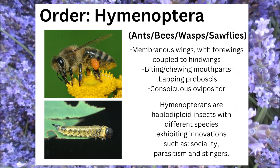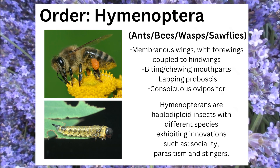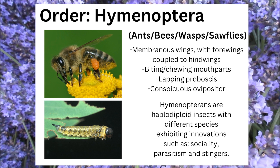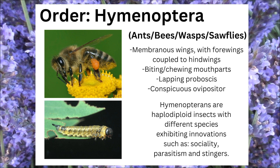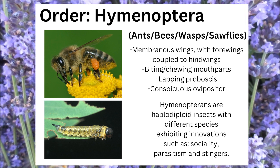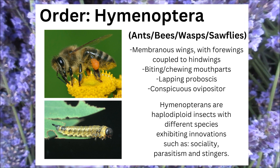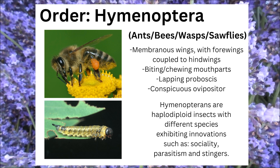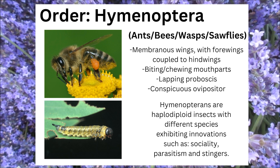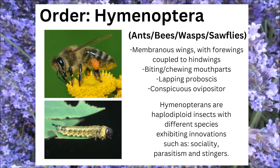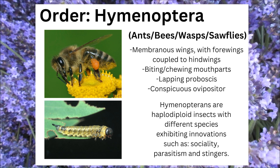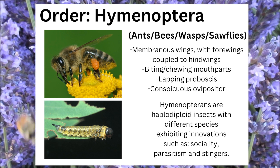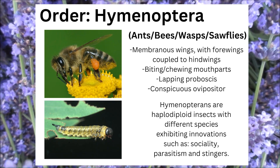The order Hymenoptera contains a variety of different types of organisms, each with a different set of unique evolutionary innovations. Hymenopterans can be identified by their four membranous wings, with their forewings and hindwings hooked together, their biting chewing mouthparts, lobe-like proboscis, and conspicuous ovipositor. Hymenopterans are haplodiploid insects with different species exhibiting innovations such as sociality, parasitism, and stingers.